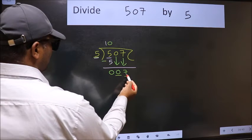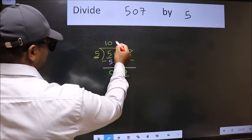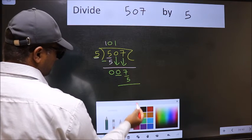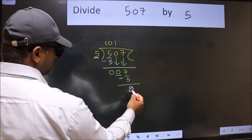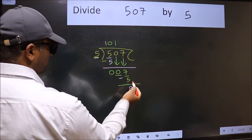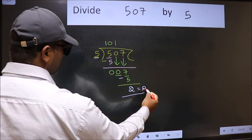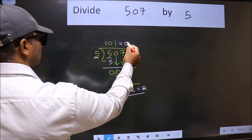Now, a number close to 7 in the 5 table is 5 once 5. Now we should subtract. We get 2. No more numbers to bring down, so we stop here. This is our remainder and this is our quotient.